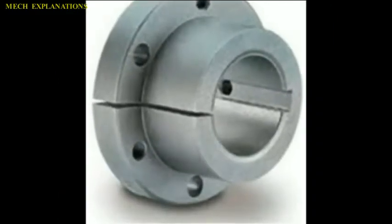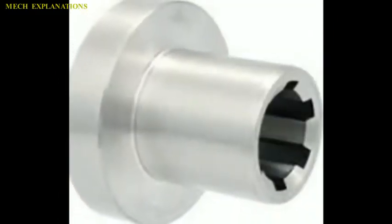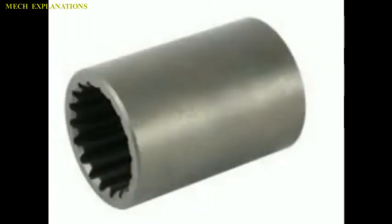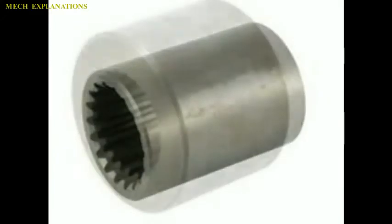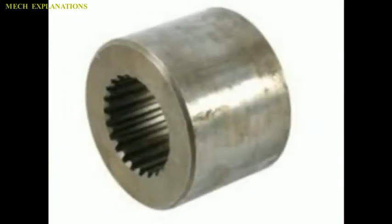A bushing is also known as a bush, an independent plane bearing inserted into a housing to provide a bearing surface for rotary applications. This is the common form of a plane bearing.